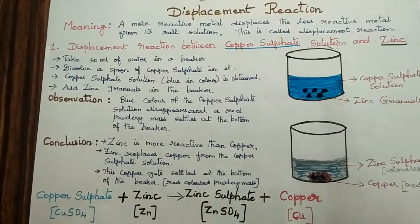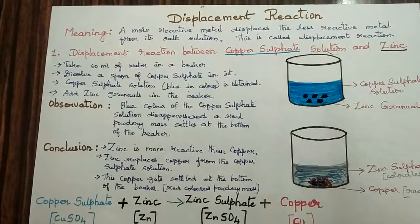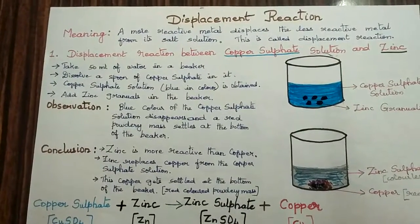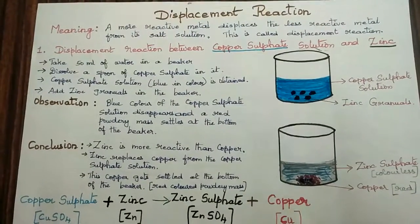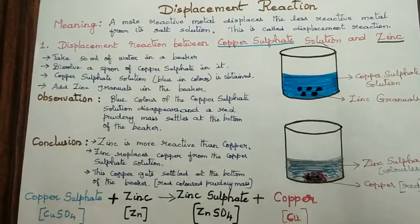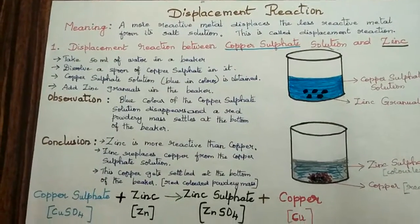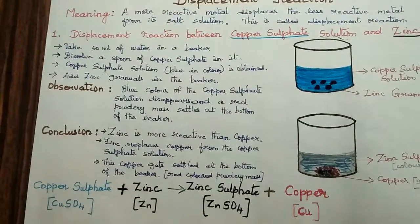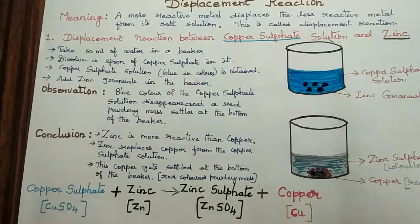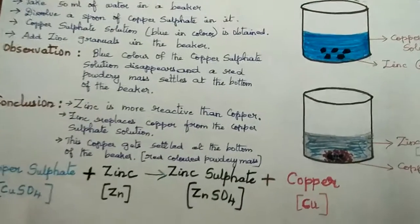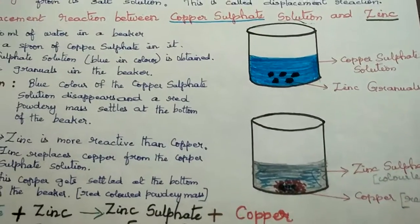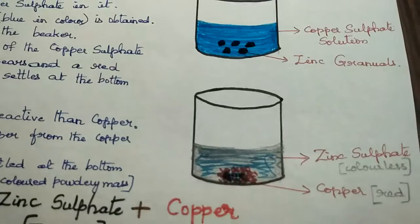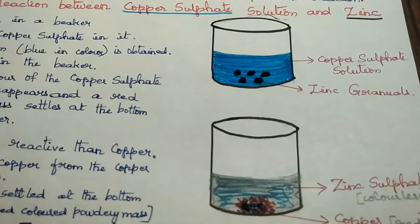What do we observe? The blue color solution of the copper sulfate disappears and a red powdery mass settles at the bottom of the beaker. The conclusion: zinc is more reactive than copper. Zinc replaces copper from the copper sulfate solution. This copper, the red colored powdery mass, gets settled at the bottom of the beaker, and zinc sulfate solution becomes colorless, as you can see in the diagrams.